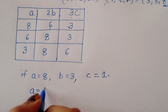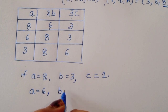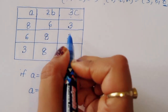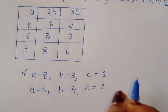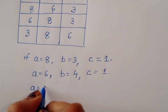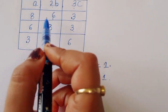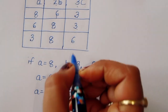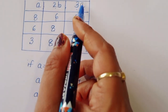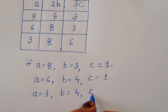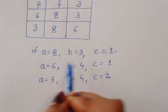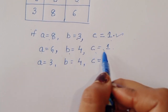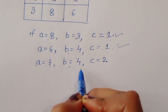Case 3: if A equals 3, then 2B equals 8 so B equals 4, and 3C equals 6 so C equals 6 divided by 3, which is 2. So the three solutions are: A=8, B=3, C=1; A=6, B=4, C=1; and A=3, B=4, C=2.